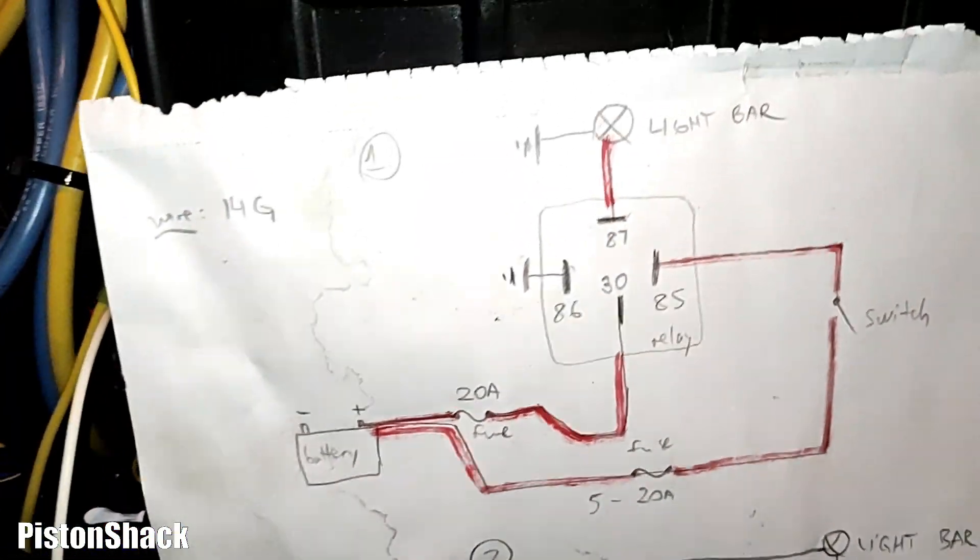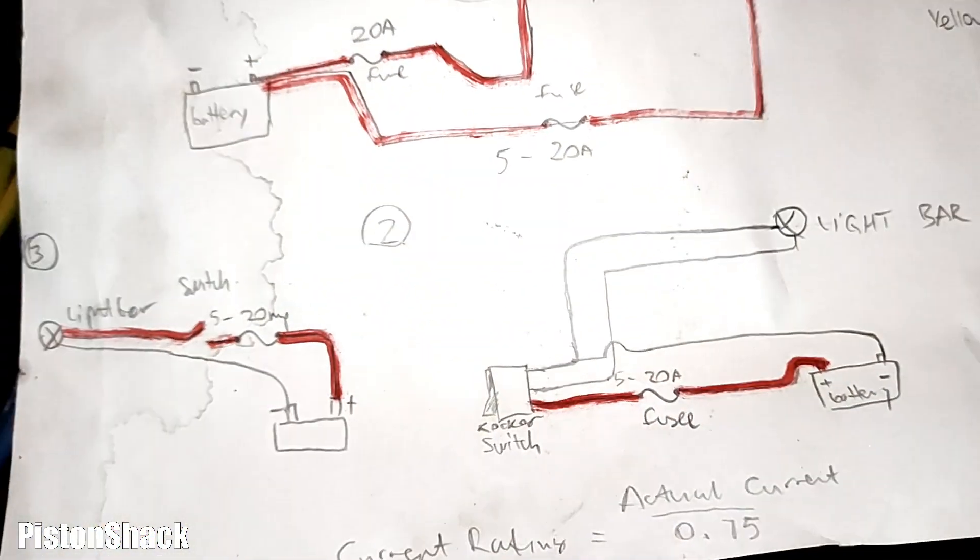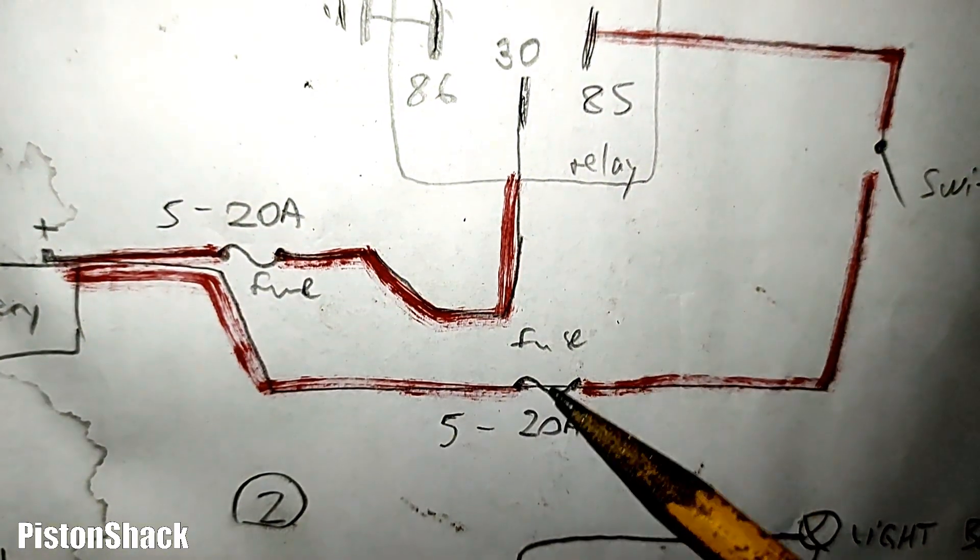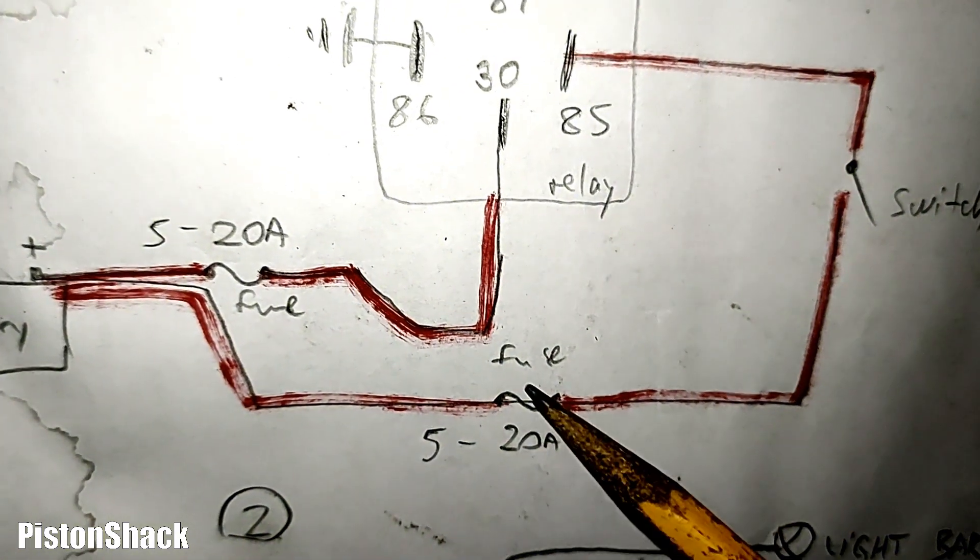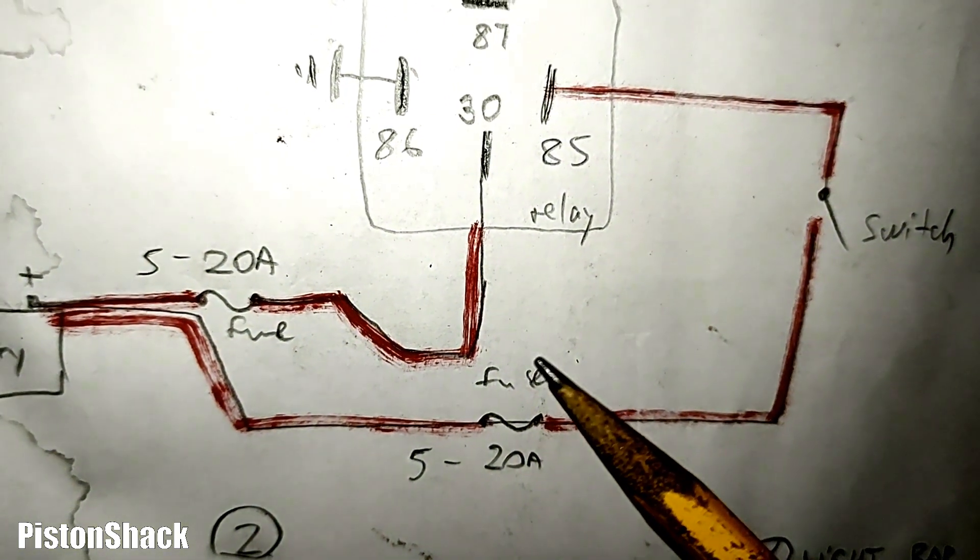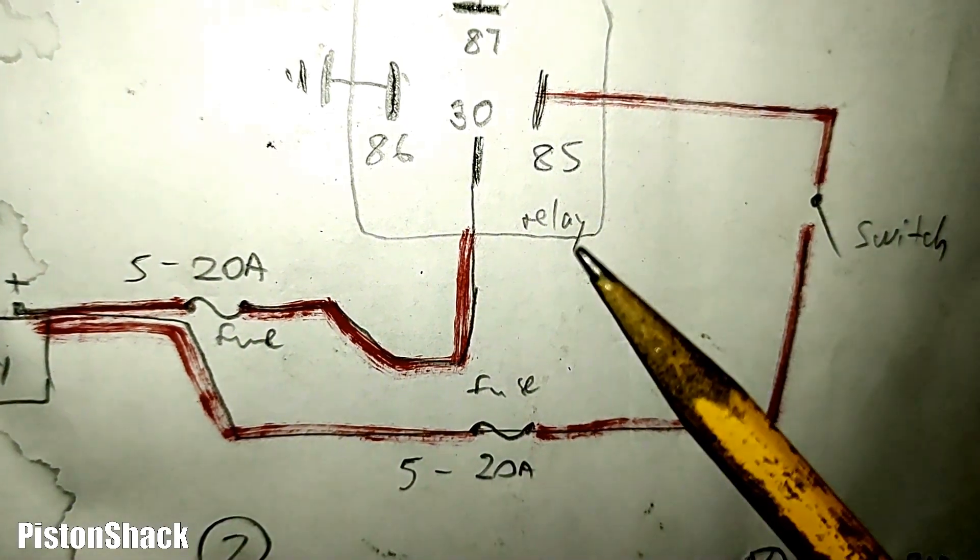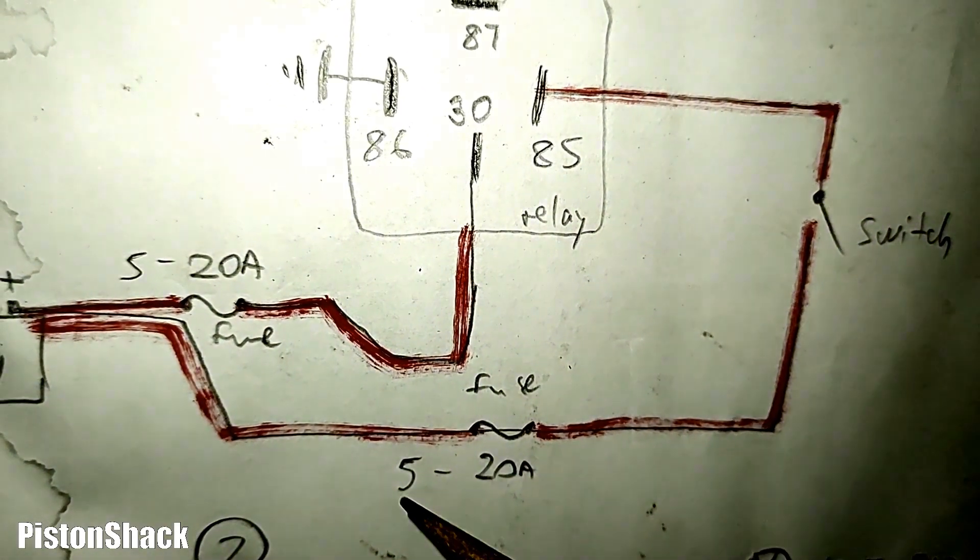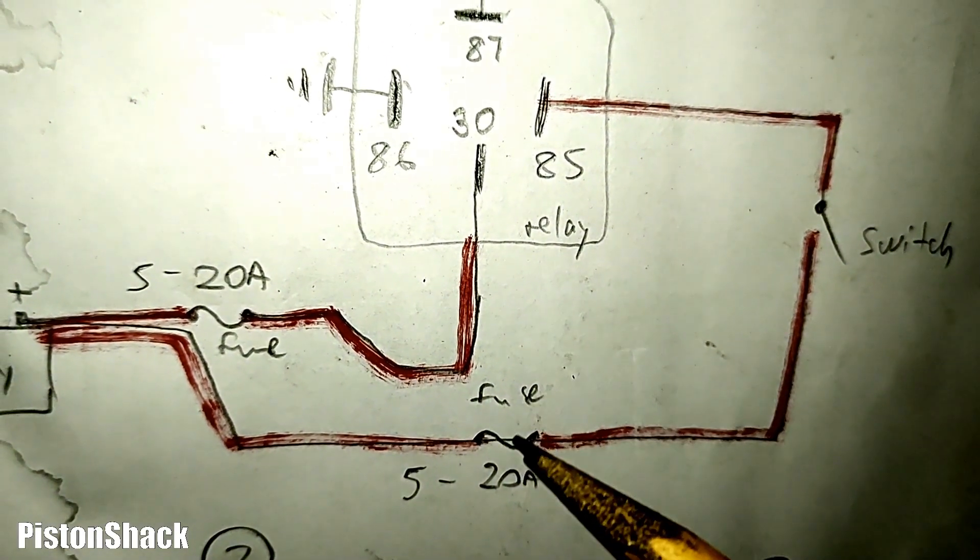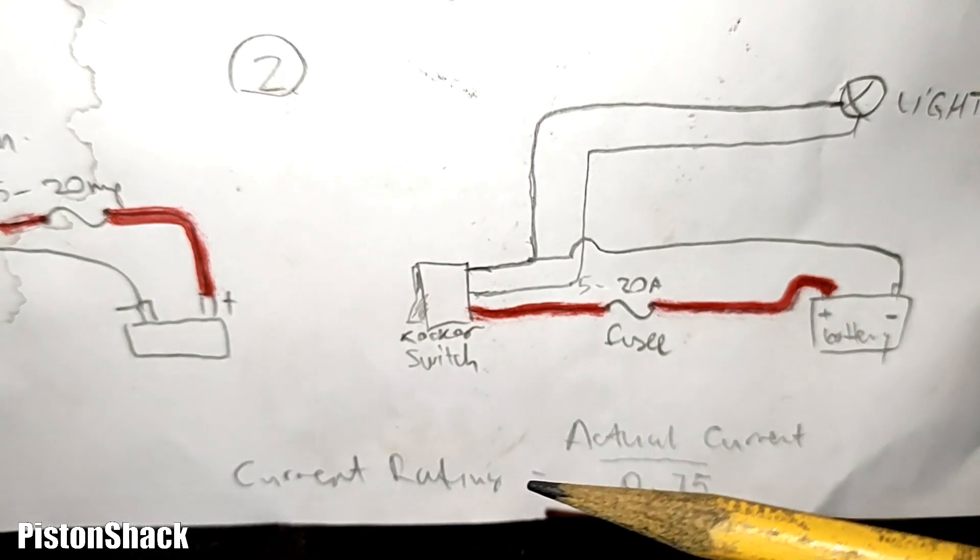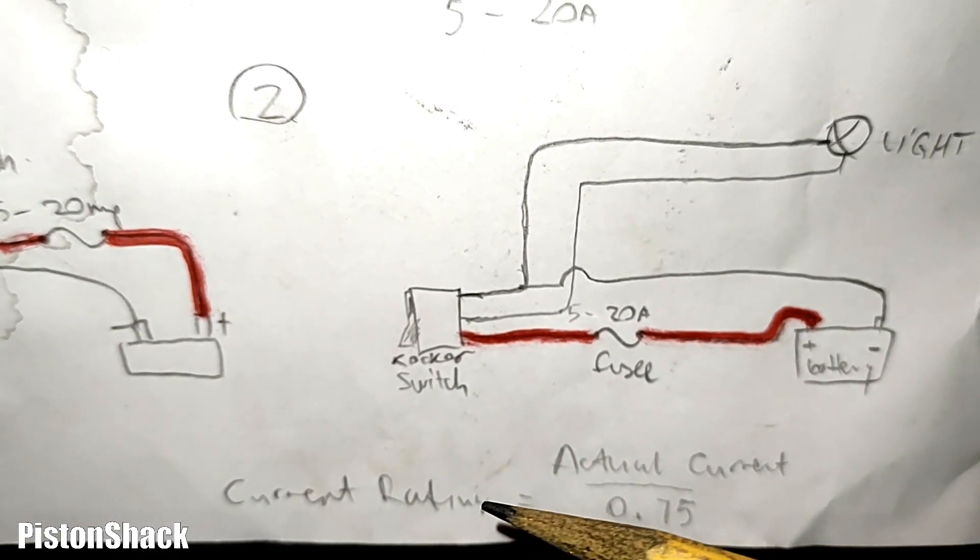Talking about what fuse to use, it depends on how much current your accessory—your light bar, whatever you're trying to power—draws. I just put 5 to 20. You can measure it with an amp clamp, and there is a formula how to calculate current rating: actual current divided by 0.75.